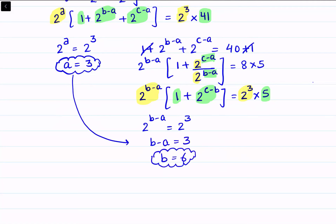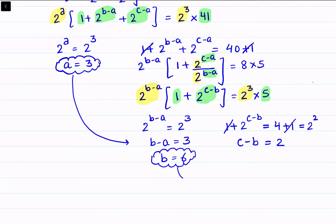Comparing the odd terms: 1 plus 2^(c-b) equals 5. Writing 5 as 4 plus 1, the 1 cancels, leaving 2^(c-b) equals 4, which is 2 squared. Since the bases are the same, the powers are equal, so c minus b equals 2. Putting b equals 6, we get c equals 8.